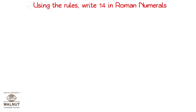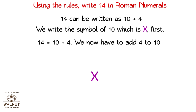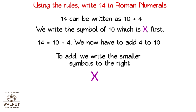Using the rules, write 14 in Roman numerals. 14 can be written as 10 plus 4. We write the symbol of 10, which is X, first. We now have to add 4 to 10. To add, we write the smaller symbol to the right. That is X, I and V. That is our answer.